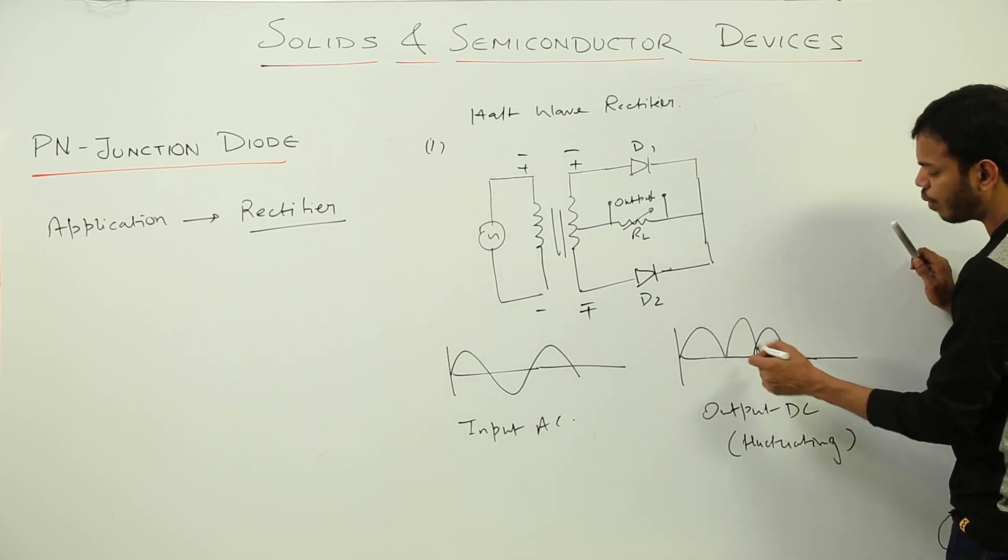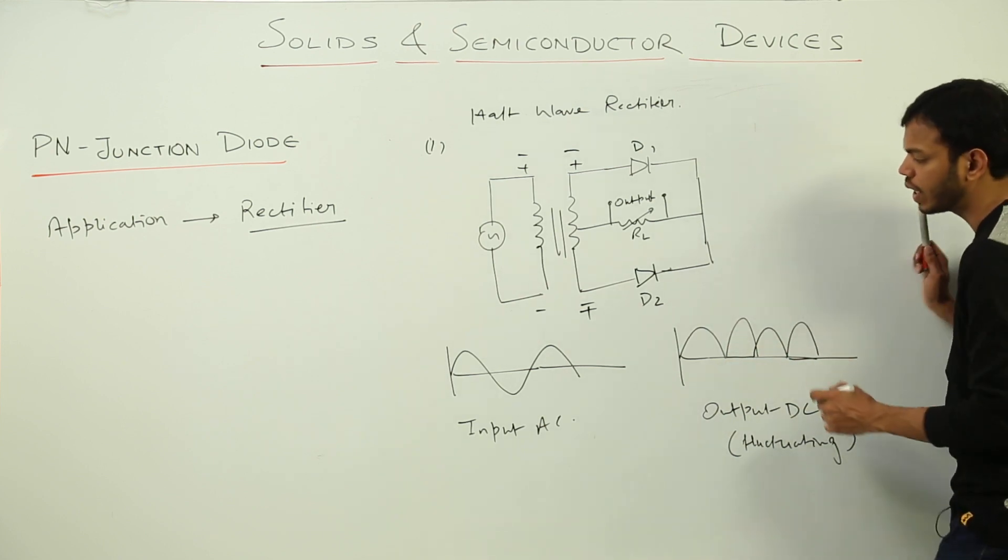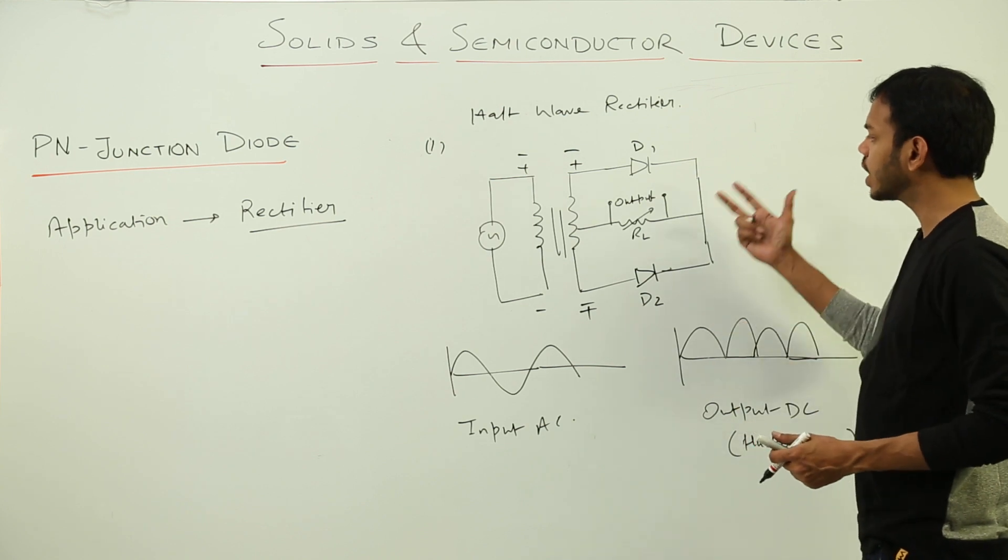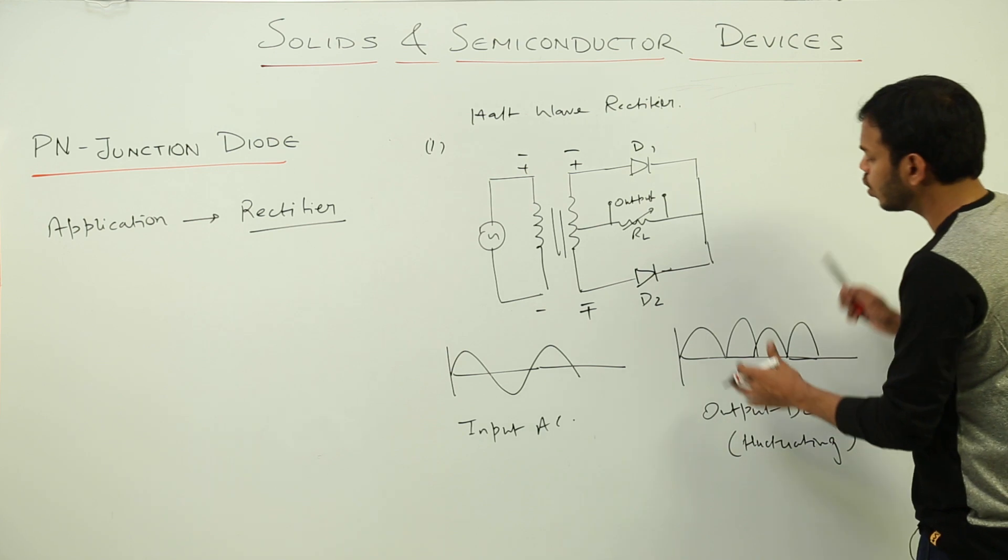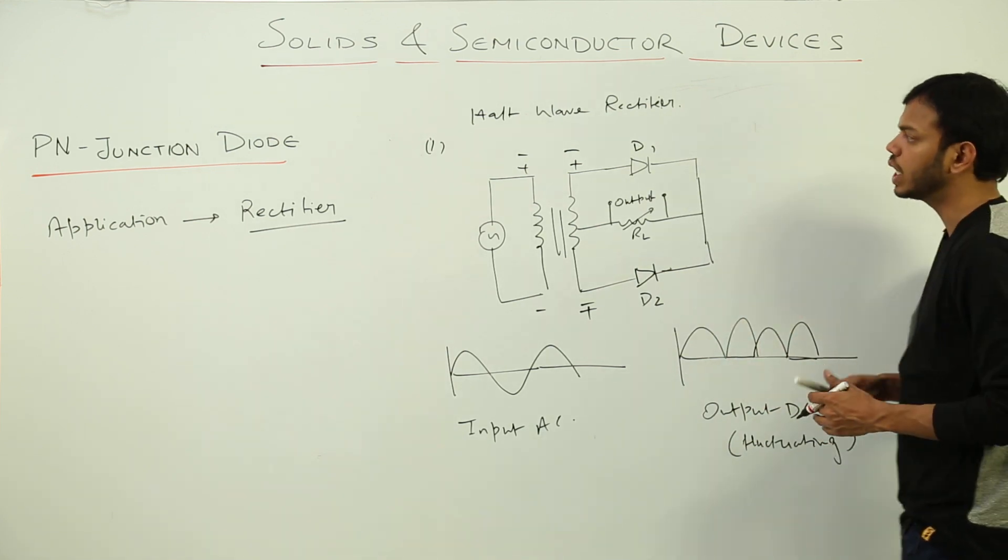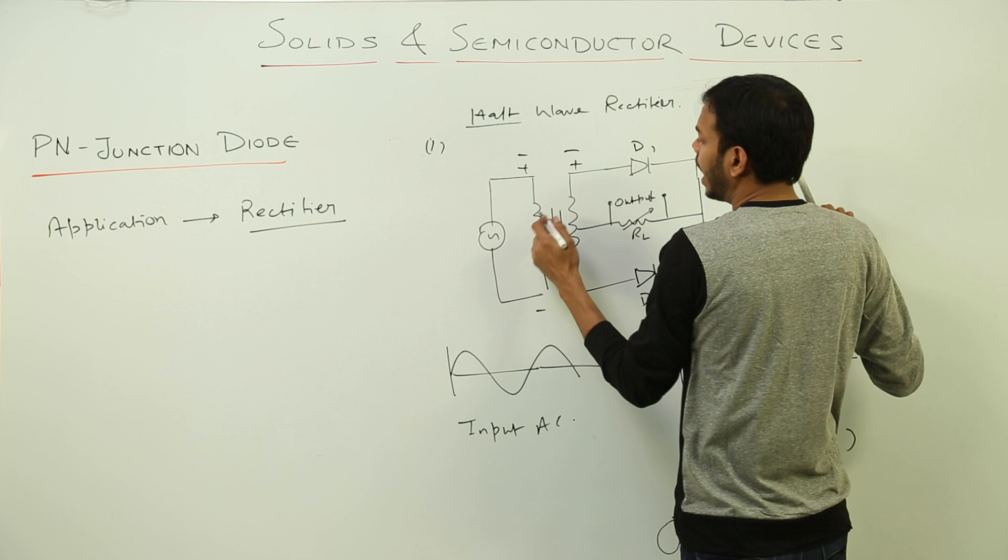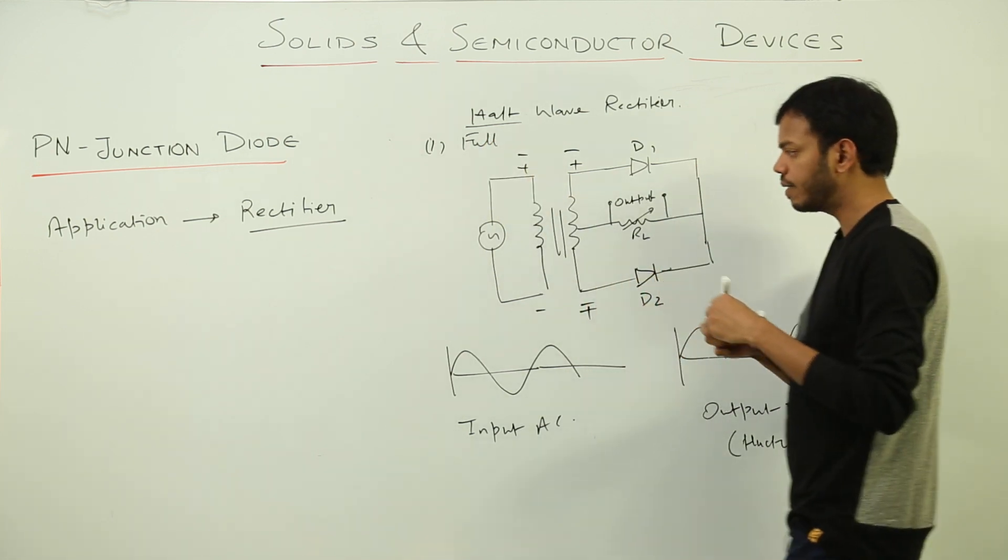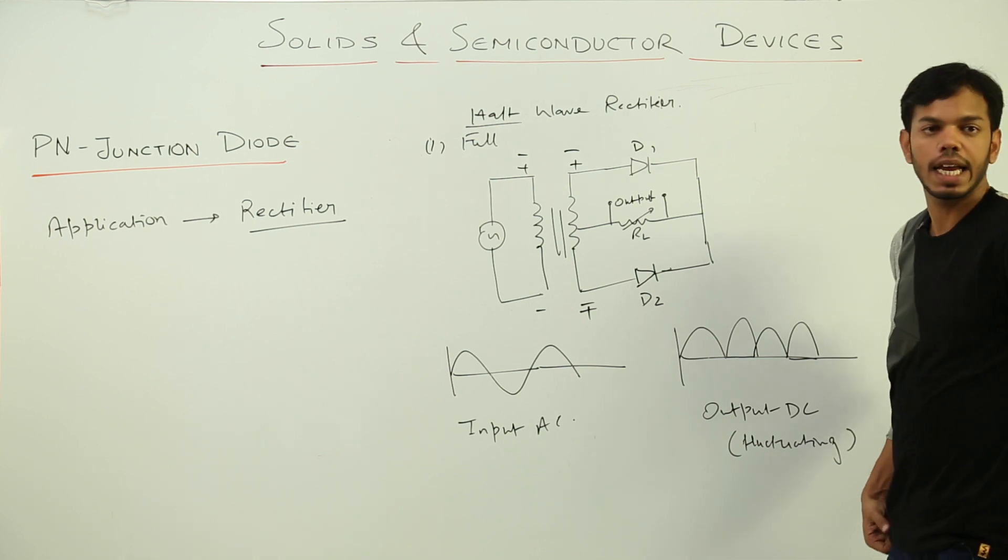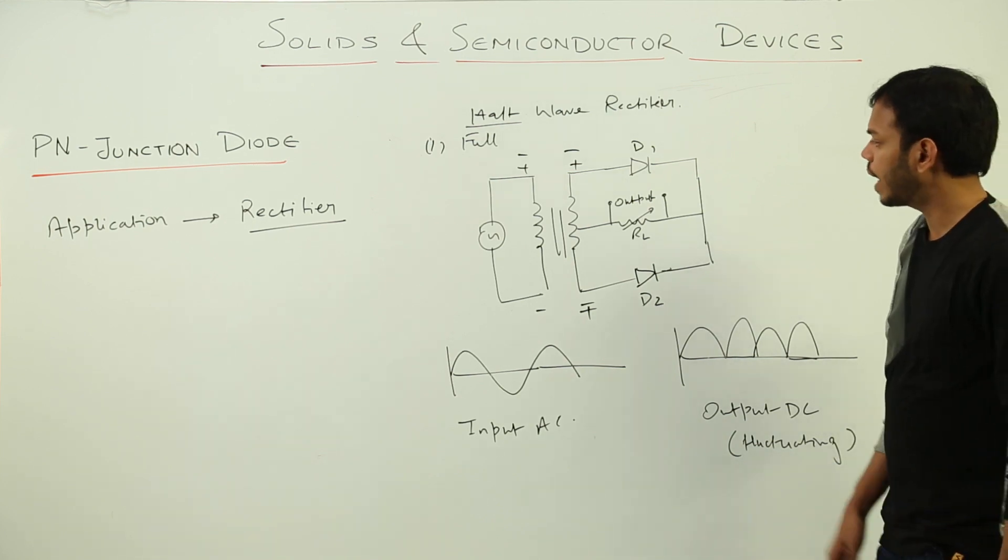So you will be having another value, then positive half cycle D1 conduct and then D2 will conduct. So this type of circuit diagram converted the whole cycle into DC. Though this is DC but this is again fluctuating in nature. So this thing converted entire wave into DC. This is called full wave rectifier. So these are two basic applications of PN junction diode.